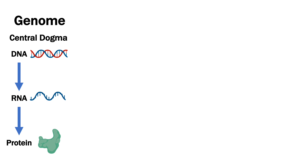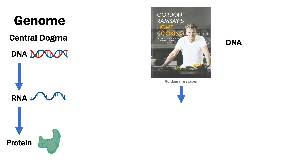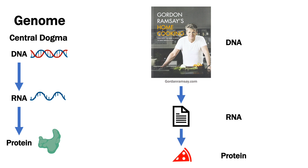Let's think of this in terms of making a meal from your favorite recipe book. The DNA would be the actual recipe book that lays out all the steps to make a meal from a certain page. You then make a photocopy of that page because you don't want to spill anything on the actual cookbook when you're cooking. This photocopy represents the RNA. Finally, you go through the steps on the photocopied paper and actually make the meal — that meal represents the protein in the central dogma, which is the final product of this process.